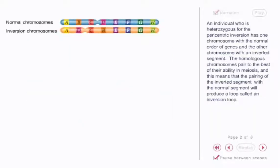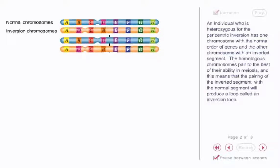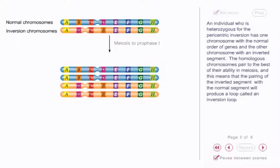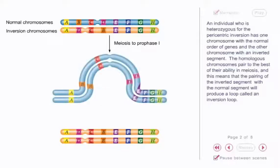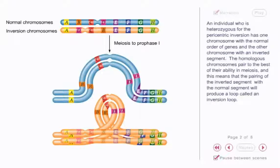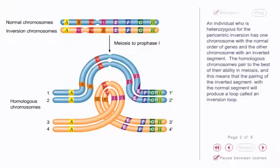An individual who is heterozygous for the pericentric inversion has one chromosome with the normal order of genes and the other chromosome with an inverted segment. The homologous chromosomes pair to the best of their ability in meiosis, and this means that the pairing of the inverted segment with the normal segment will produce a loop called an inversion loop.